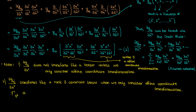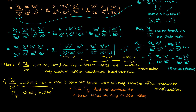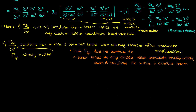When we only look at affine coordinate transformations, the partial of the metric tensor with respect to a coordinate transforms like a covariant tensor of rank 3. Since the Christoffel symbol of the first kind directly involves this metric tensor partial derivative, it makes sense that it has three indices in the subscript. Because of this relationship, the first kind Christoffel symbol also follows the same rules: it doesn't transform like a tensor unless we have an affine coordinate transformation, and when it does, it transforms like a rank 3 covariant tensor.